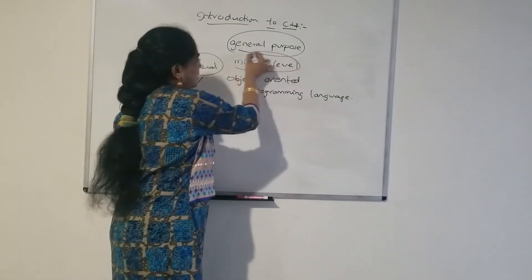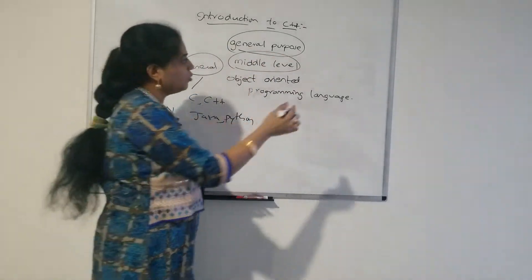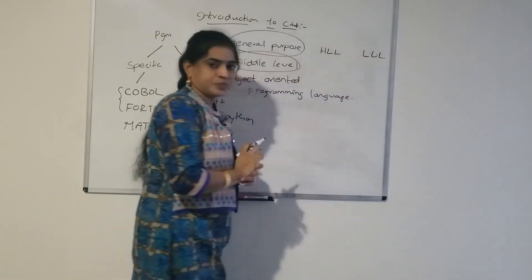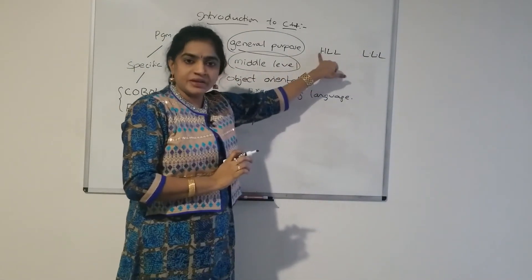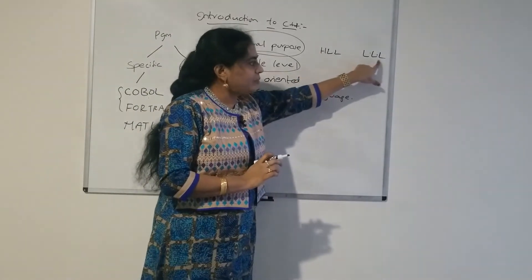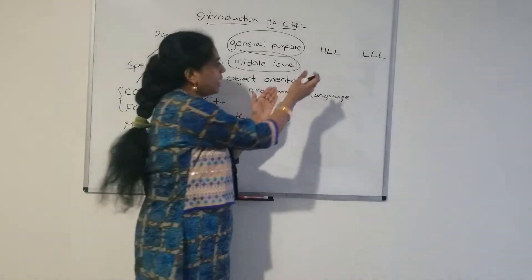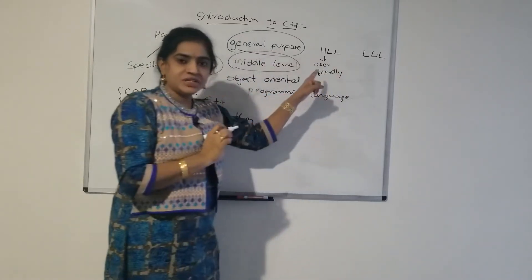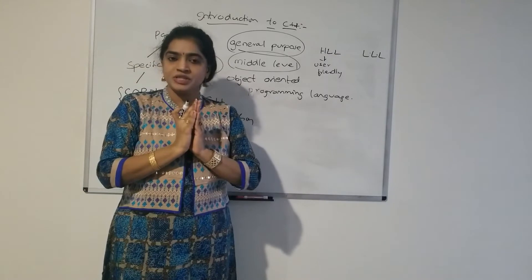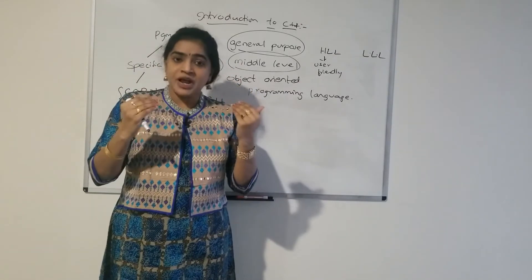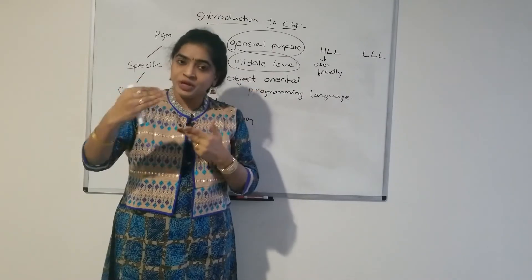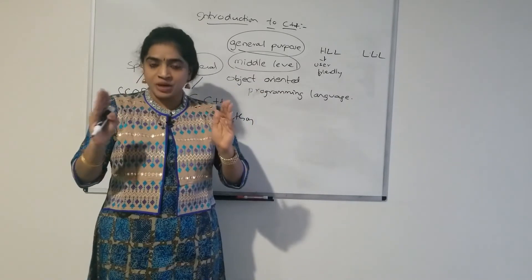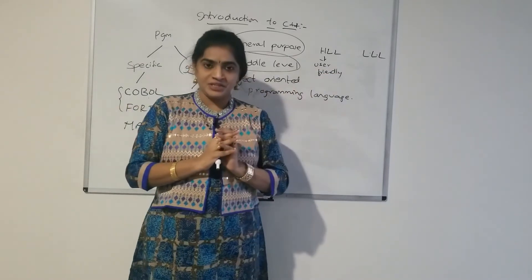Next is middle level. What is meant by middle level? We have two types of programming languages: high level language (HLL) and low level language (LLL). High level programming languages are all user-friendly languages — easy for the user to understand, develop, test, modify, debug, and maintain the code. Such languages are called user-friendly programming languages.